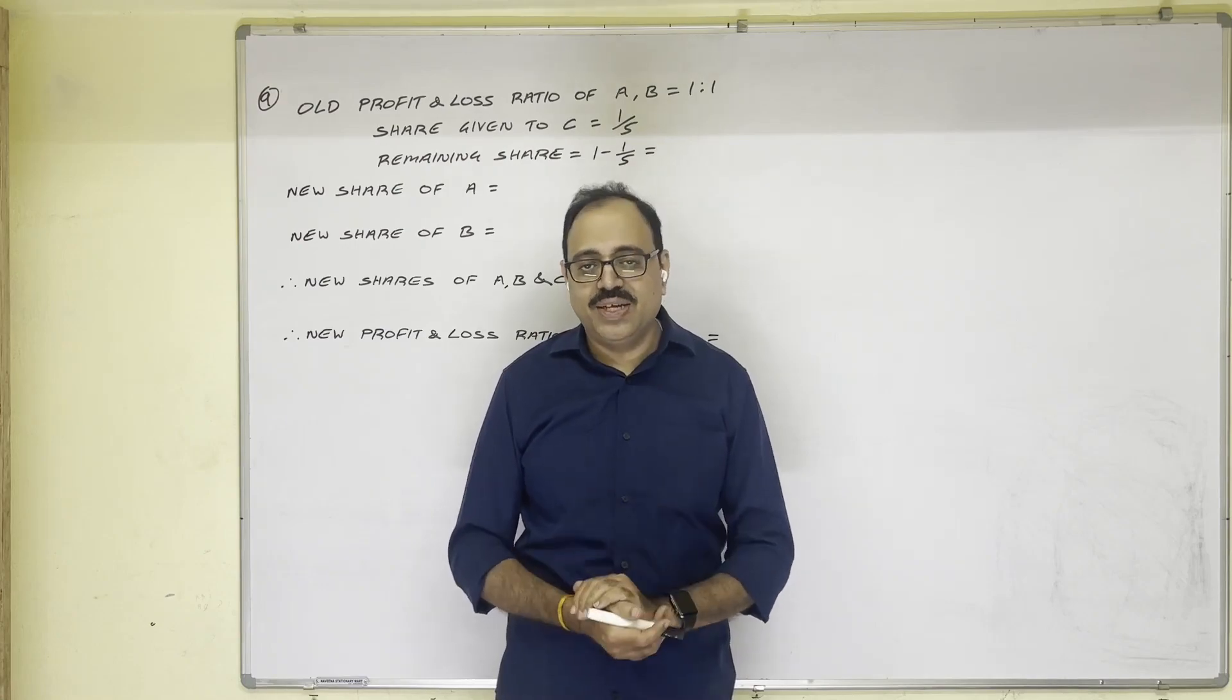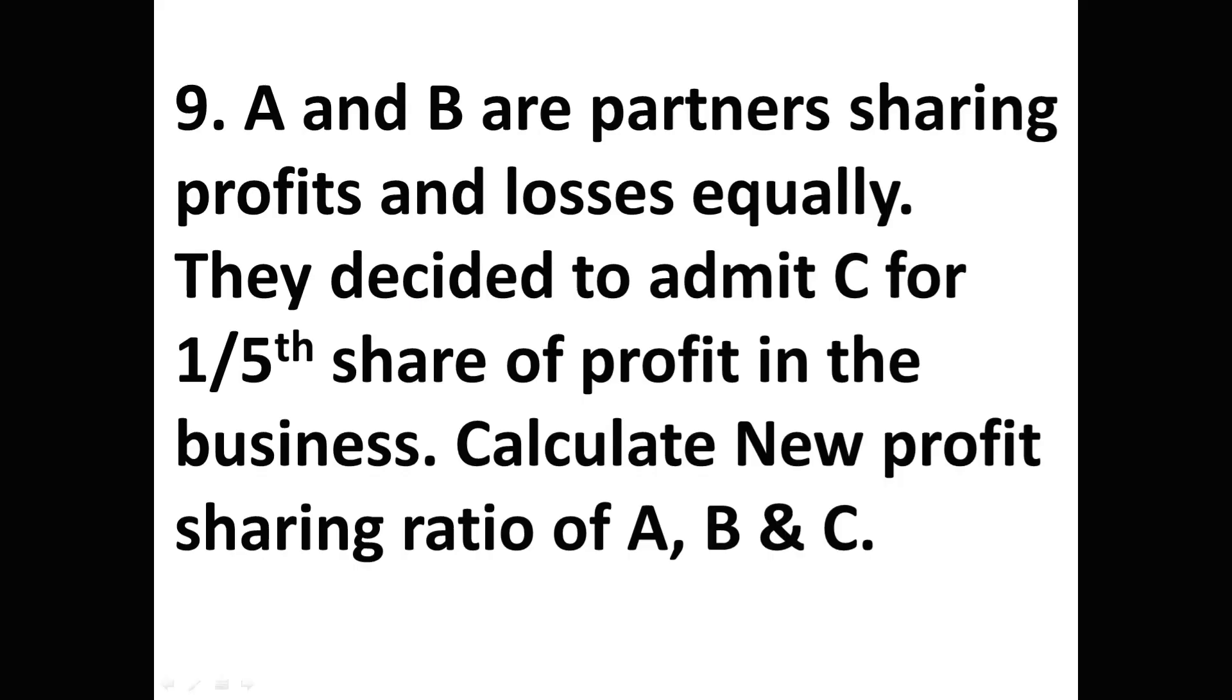Let us see the question first. A and B are partners sharing profits and losses equally. They decided to admit C. Actually in testbook here, instead of C, he has given Krishna name. It is a printing mistake, correct name is C. C for 1/5th share of profit in the business. Calculate new profit sharing ratio of A, B and C. This is the question.